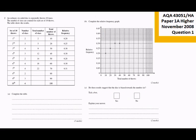Exam question. An ordinary six-sided dice is repeatedly thrown 10 times. The number of sixes are counted for each set of 10 throws. The table shows the results. And there we are. So in the first 10 throws, there are 2 sixes. So that makes 2 sixes out of 10 throws, relative frequency, 2 out of 10, 0.2.